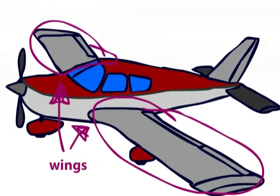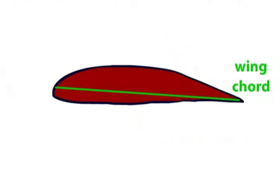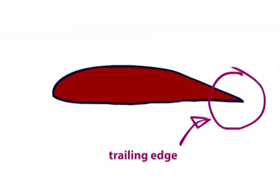Before I explain the angle of attack, a couple of definitions. First, the wing chord. This is this green line drawn from the leading edge to the trailing edge of the airfoil.